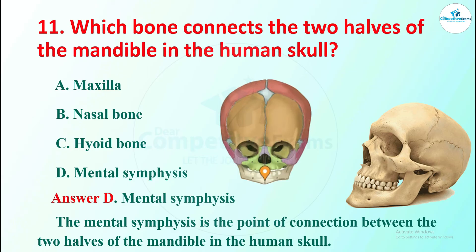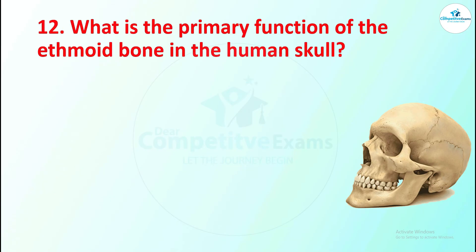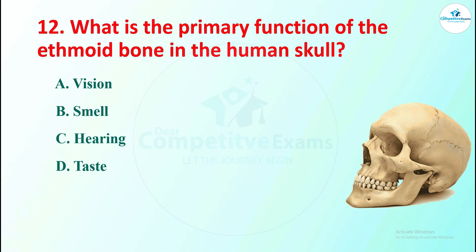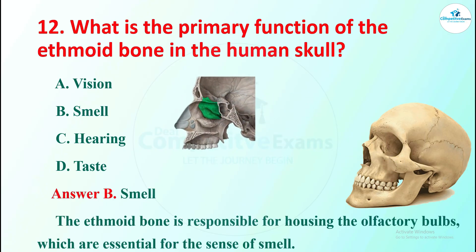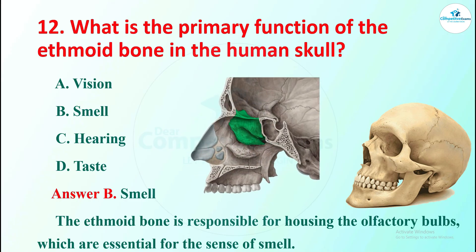Question 12: what is the primary function of the ethmoid bone in the human skull? Options are vision, smell, hearing, and taste. The right answer is smell. The ethmoid bone is responsible for housing the olfactory bulbs, which are essential for the sense of smell.